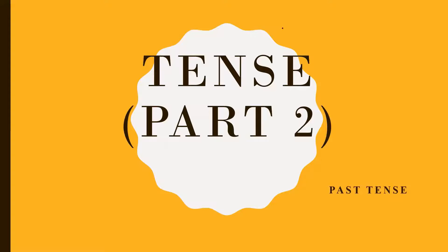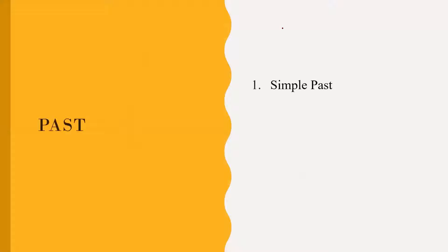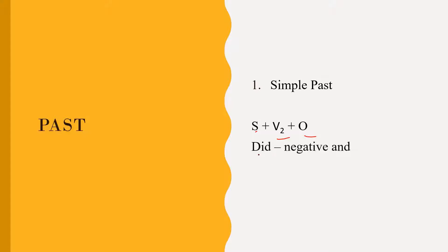Past tense. Simple past. Formation: Subject plus second form of verb plus object. We use 'did' in simple past for negative and interrogative sentences.